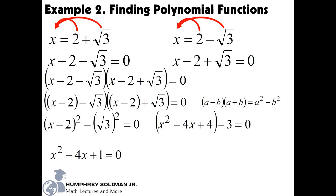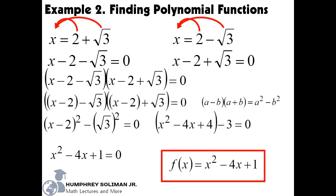Again, if we want, we can write this in function notation. Our final answer is f of x is equal to x squared minus 4x plus 1.